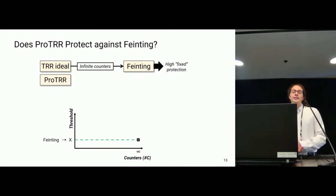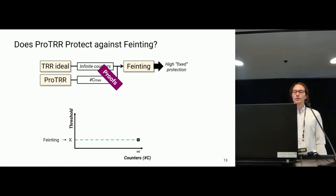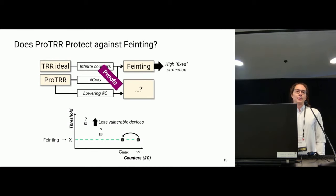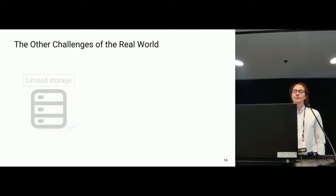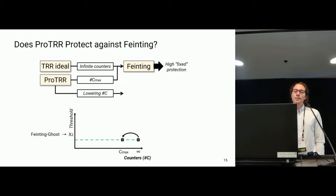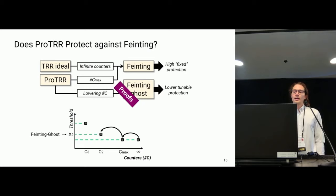So how does ProTRR protect against fainting? With TRR ideal and infinite counters, fainting gives a maximum fixed protection. We showed and proved that using a limited number of counters, CMAX, results in the same protection. But we'd like tunable protection — using fewer counters for devices that are less vulnerable. If we lower the number of counters, fainting adapts into what we call fainting ghosts, becoming more effective against a lower number of counters, which is exactly what we want for tunable protection.